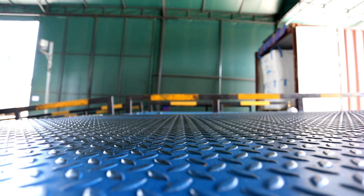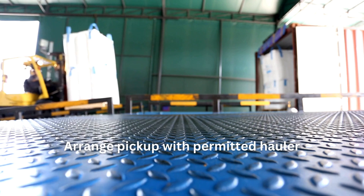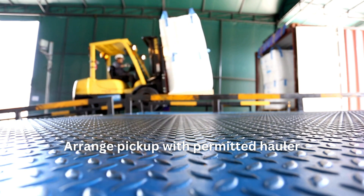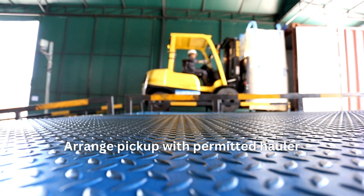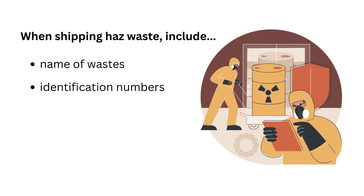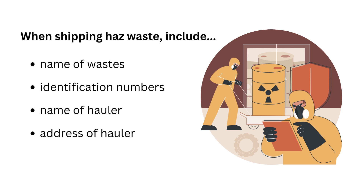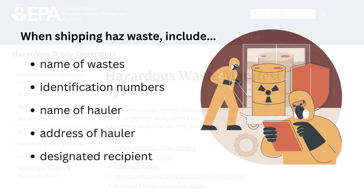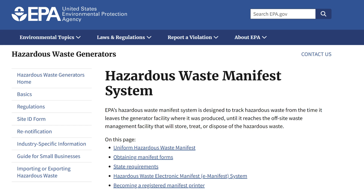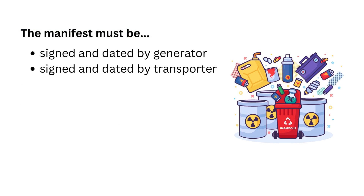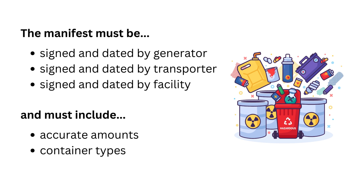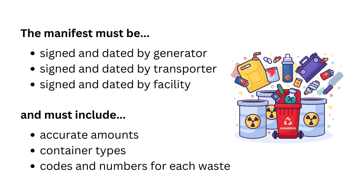Step 5: Arrange for disposal with a permitted hauler. When an accumulation date is approaching, call your hauler to transport the waste to a facility authorized to recycle, treat, store, or dispose of the waste. Include the shipping name and identification numbers of the hazardous waste, the name and address of the hauler, and the designated recipient. SQGs and LQGs must use a Uniform Hazardous Waste Manifest when shipping hazardous waste. It must be signed and dated by the generator, transporter, and a treatment storage and disposal facility representative, and include the amount, container types, codes, and numbers for each of the hazardous wastes shipped.